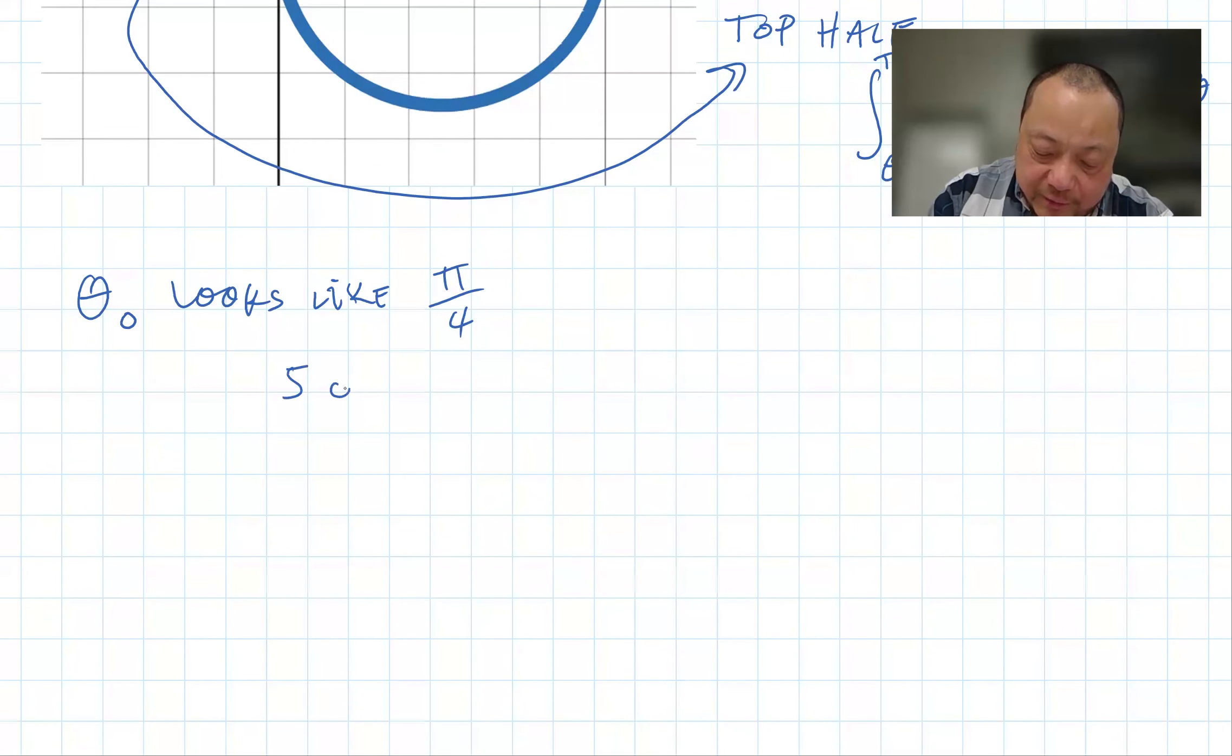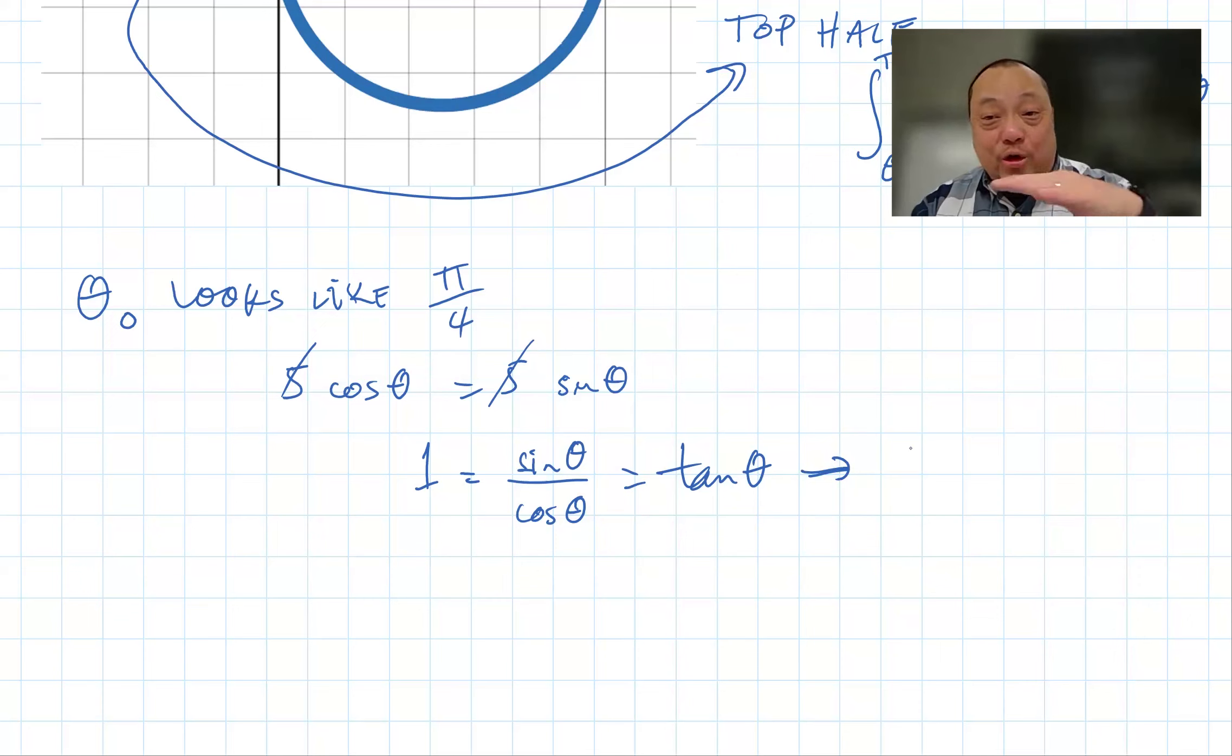Therefore, we're setting 5 cosine theta equals 5 sine theta. Divide both sides by 5, these are gone. Divide both sides by cosine theta. Then we have 1 equals sine theta over cosine theta, which is tangent theta. And therefore, the answer for the angle in the first quadrant is theta equals pi over four.